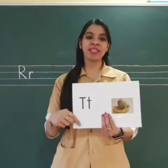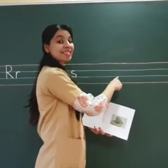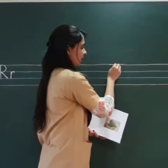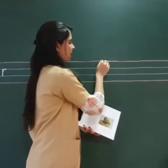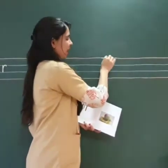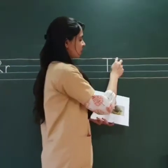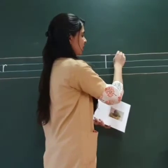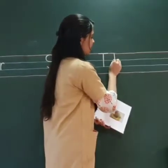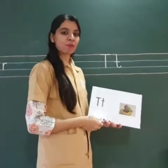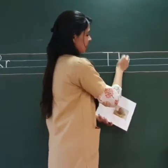Now let us see on the blackboard how do we write letter T. Here we have got red and blue lines. We will start writing from the first red line to the second blue line. A sleeping line on the red line and a straight standing line towards the second blue line gives us capital T. Now let us write small t. We will again use the first red line to the second blue line. One straight standing line and a small curve towards the second blue line, and a cut — a sleeping line on the first blue line — gives us small t.